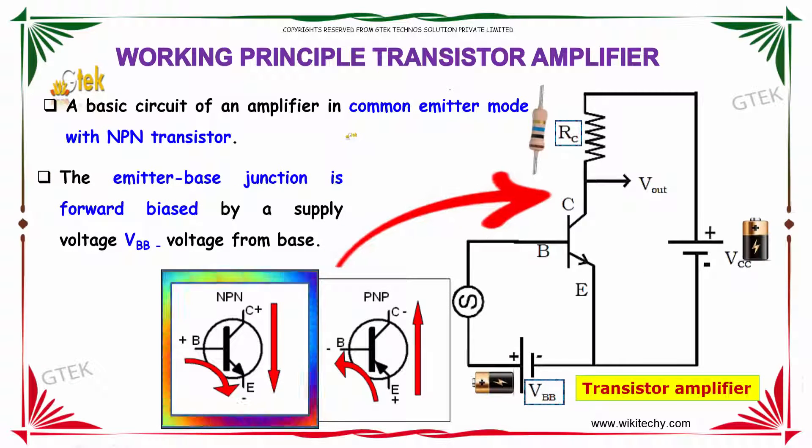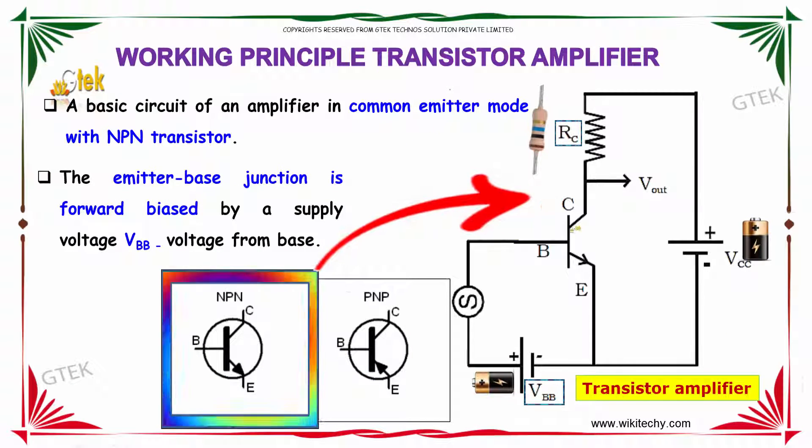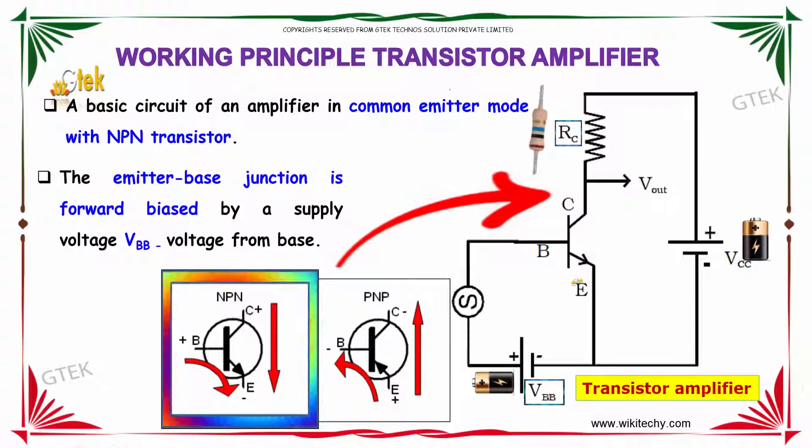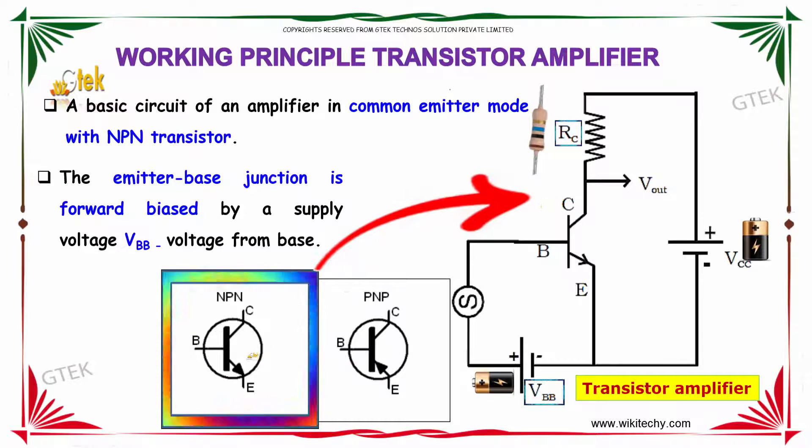A basic circuit of an amplifier in common emitter mode with the NPN transistor is shown. Here is the NPN transistor with N, P and N. Here is P and P, N and P.